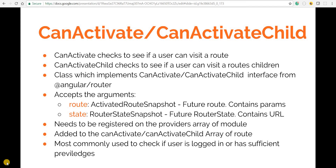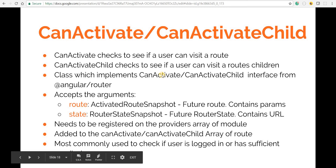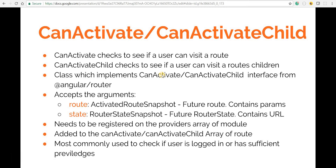To create these guards, we need to create a class decorated with an injectable decorator, which converts them into a service. We'll then implement the canActivate and/or the canActivateChild interfaces from @angular/router. Based on which interface we implement, we'll define a method — either canActivate or canActivateChild — that accepts two arguments: a route and a state.